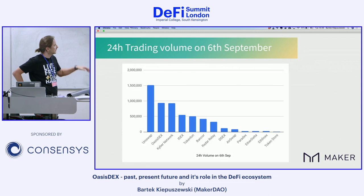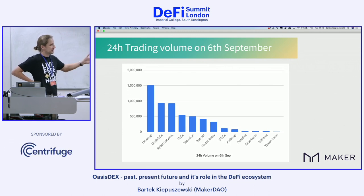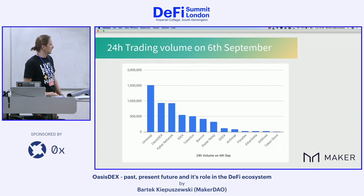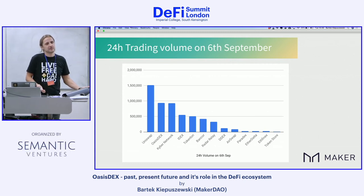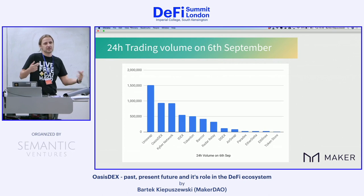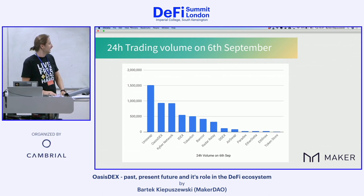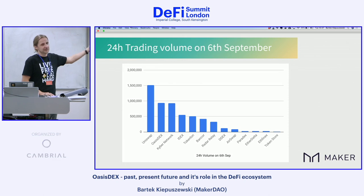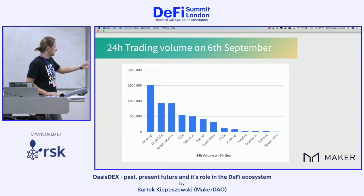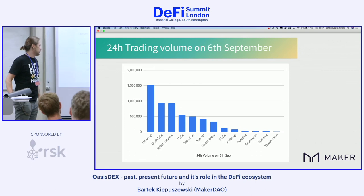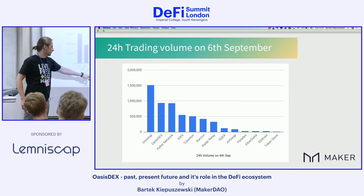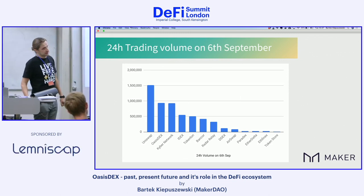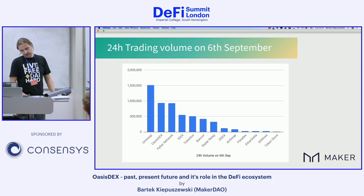Then we've got IDEX and Tokenlon, Bancor, Radar Relay, and some others. That's how I see the volume. You have to remember that all these protocols, except OasisDEX, trade a lot of different tokens. Through our UI we only trade ETH and DAI. So it's not a completely fair comparison since we only have one trading pair.